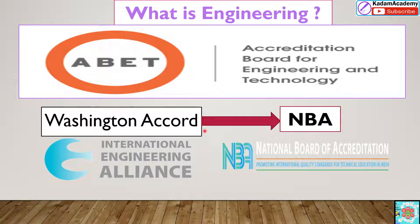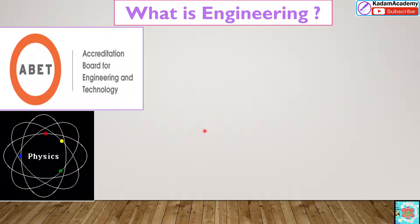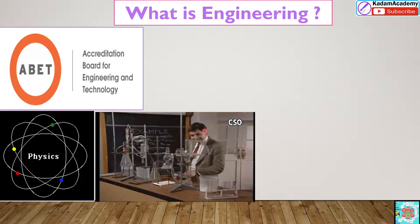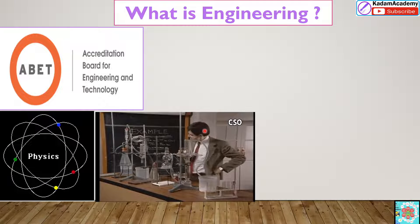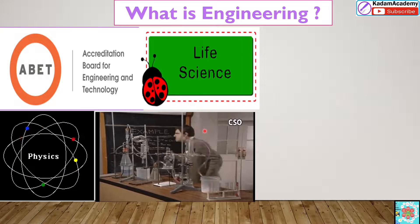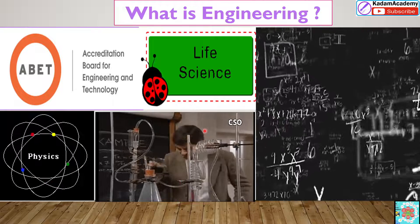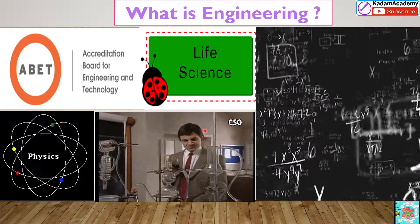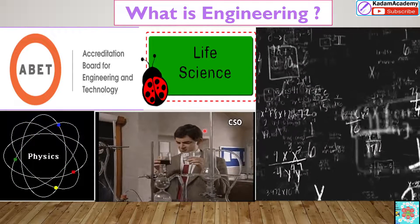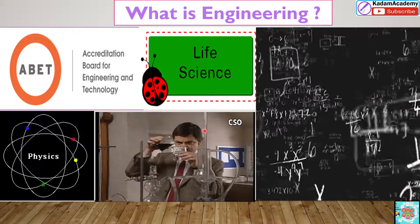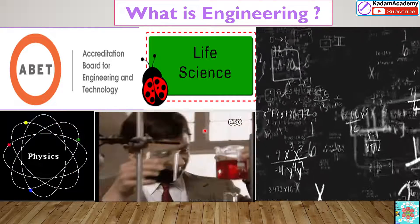So friends, what is engineering as defined by ABET? ABET has defined engineering as the profession in which the knowledge gained in physics, chemistry, life sciences, and mathematics is applied to make products in large quantities that increase the prosperity of man. This is the engineering definition by ABET.